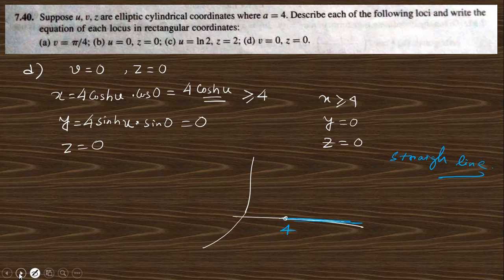Next, question 7.41 says: u, v, z are parabolic cylindrical coordinates. For parabolic cylindrical coordinates the transformation equations are x = ½(u² − v²), y = uv, and z = z. This is the transformation from parabolic coordinates to Cartesian coordinates. Graph the curve or region described as follows.